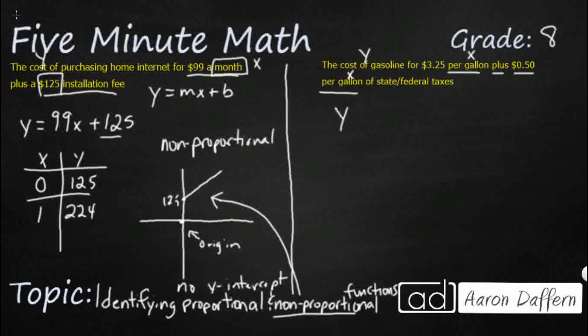So it looks like we're going to have y equals 3.25x plus you've got this 0.5x as well because they're both per gallon.